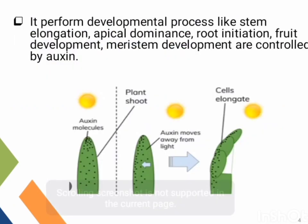Auxin is involved in a lot of developmental processes in the plant body: stem elongation, apical dominance, root initiation, and root development or meristem development. These are all the processes controlled by Auxin.